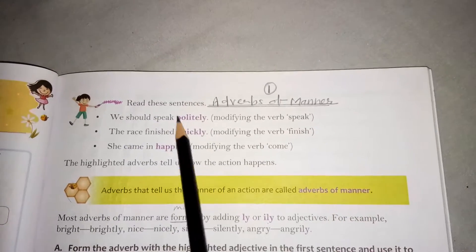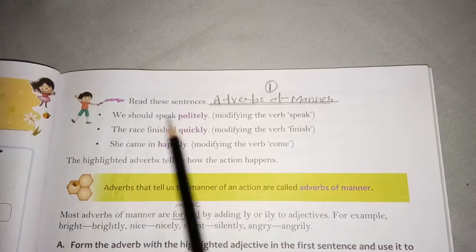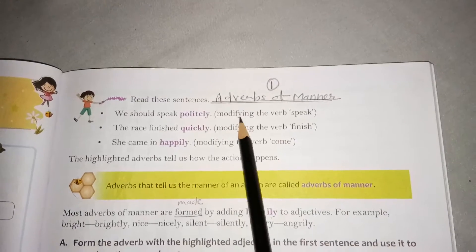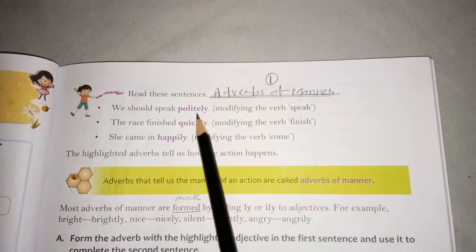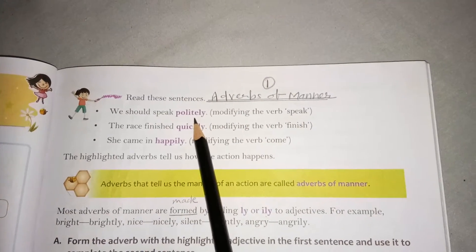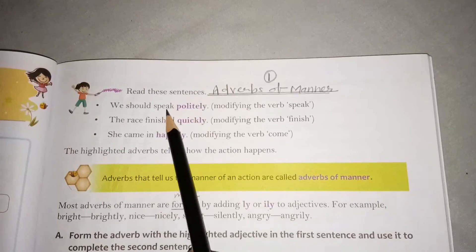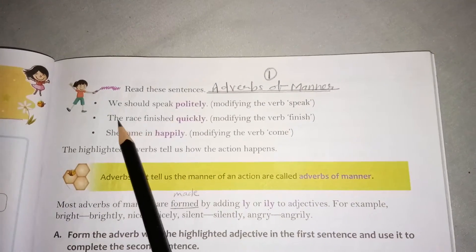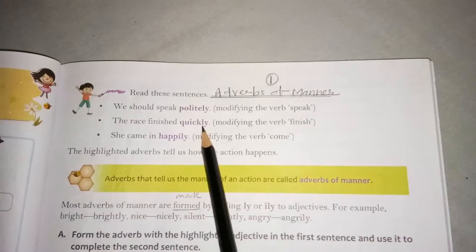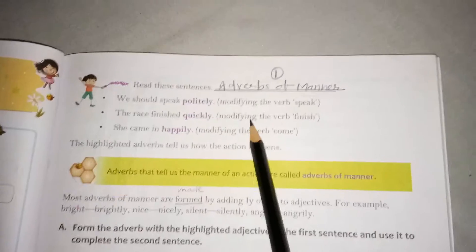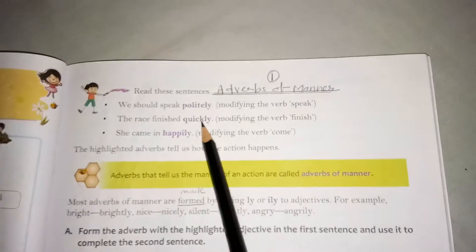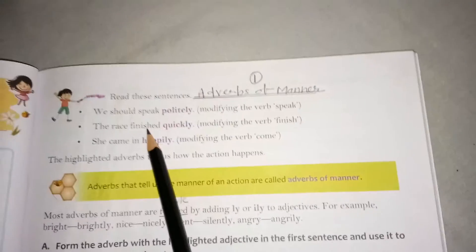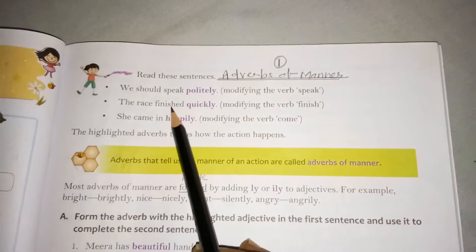For example, we should speak politely — politely is modifying the verb 'speak'. The race finished quickly — quickly is modifying the verb 'finish', telling us how the race finished.